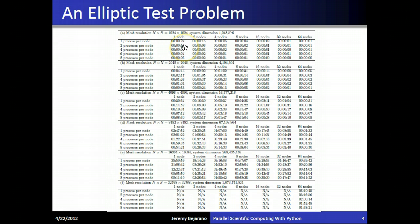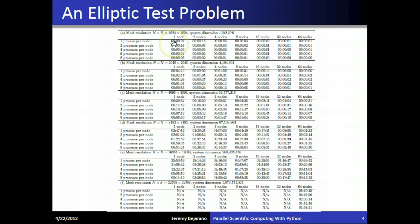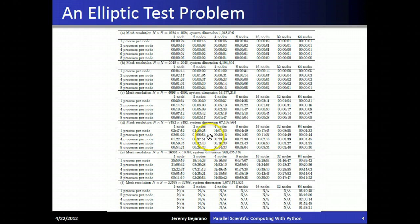Here we see the speed-ups achievable with parallel programming. On one process and one node, the 1,000 by 1,000 mesh problem took about 27 seconds to solve. As we make the problem more complex — this 10,000 by 10,000 problem — it took three hours on one process and one node. But as you bump up the number of nodes and processes, you get faster and faster. On 64 nodes with eight processors per node, you can solve the same problem in 50 seconds, which is a huge speed-up.